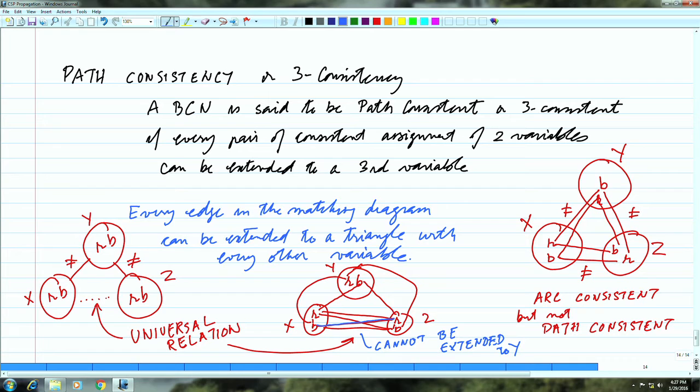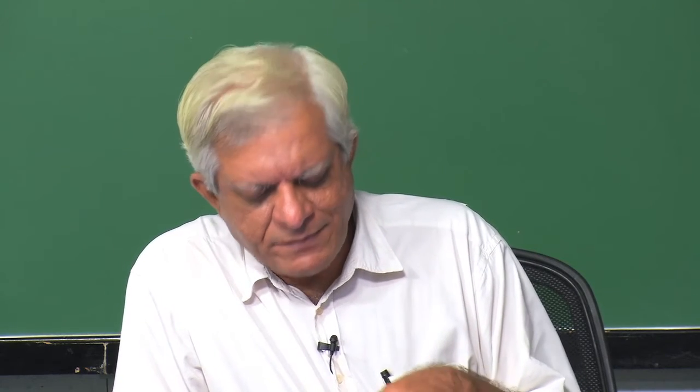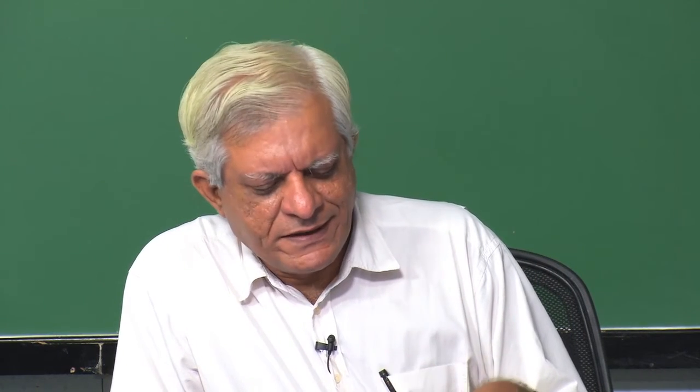What will enforcing path consistency do? It is analogous to what we did in arc consistency. In arc consistency we inferred unary relations — that is 2-consistency inducing unary relations. In path consistency, which is 3-consistency, we will infer binary relations. We will now impose a relation between X and Z — the relation that X must equal Z, that they must be colored with the same color. We had actually seen this when we looked at composition of relations: composing R(x,y) with R(y,z) gives a new relation R(x,z).